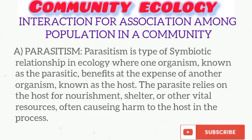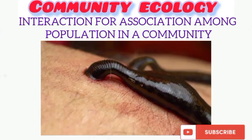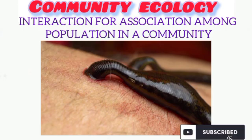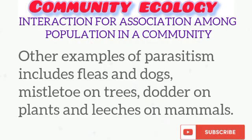Parasitism is a kind of association between two species where one benefits and the other is harmed. From the diagram, you can see that humans are actually being harmed by the leech, which benefits by feeding on human blood. Other examples of parasitism include fleas on dogs, mistletoe on trees, dodder on plants, and ticks on mammals.